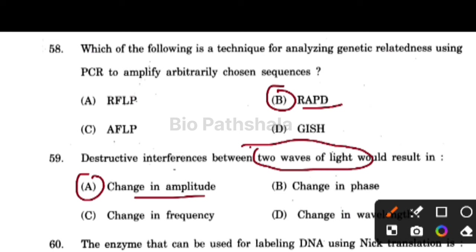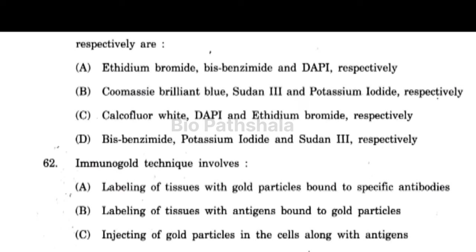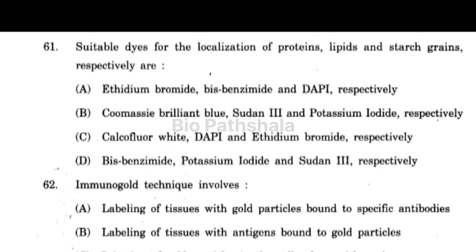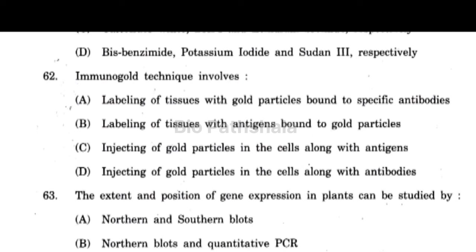Next question: the enzyme that can be used for labeling DNA using nick translation is option number D — DNA polymerase I. Next question: suitable dyes for localization of proteins, lipids, and starch grains respectively — for protein use Coomassie Brilliant Blue, for lipids use Sudan III, and for starch use potassium iodide.